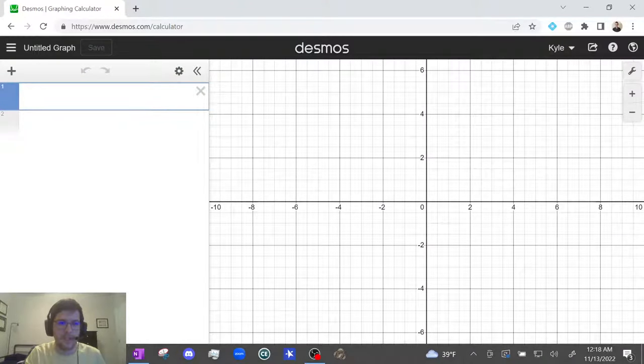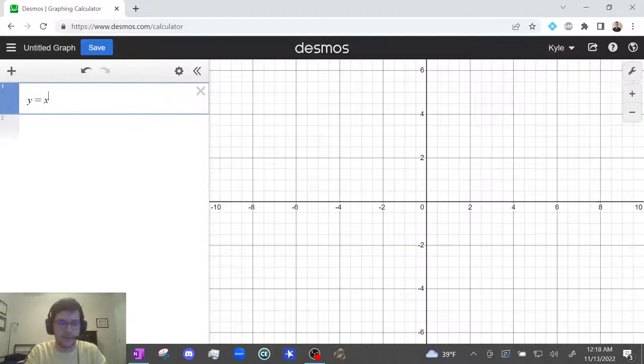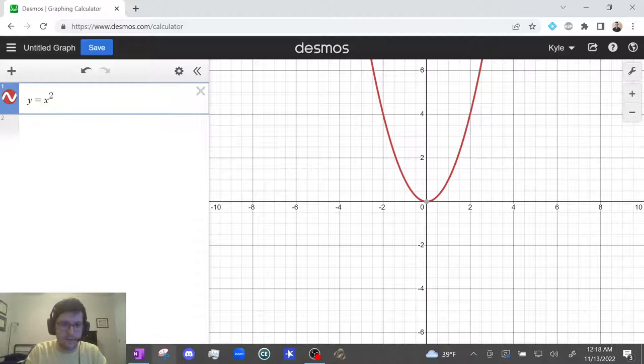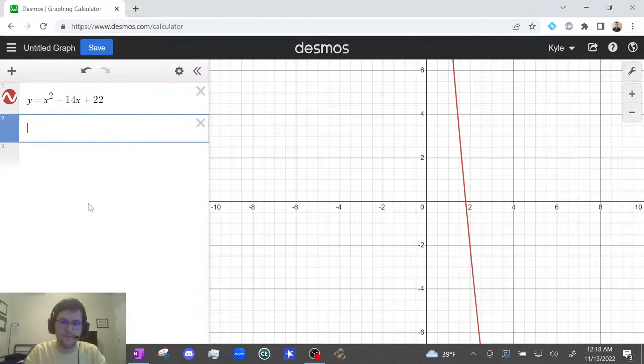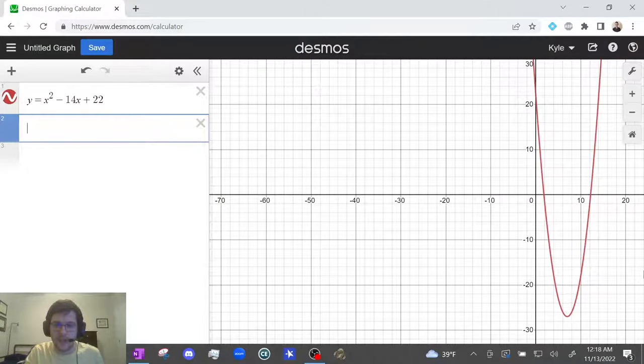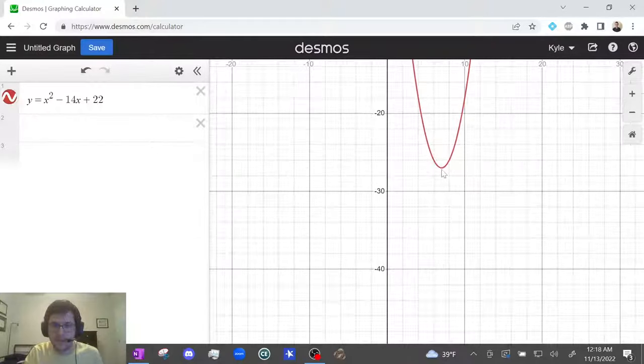So let's try this one. We're gonna hop over to Desmos and type in y equals x squared minus 14x plus 22. And I can't really see where the vertex is, so of course I'm gonna use my scroll wheel to zoom out. And it looks like it's down here, so I'm gonna zoom in a little bit.